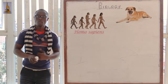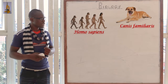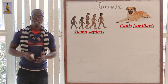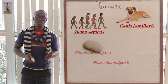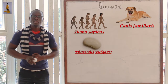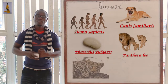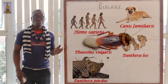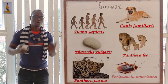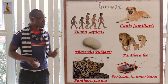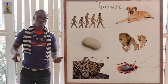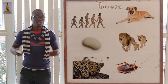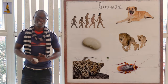The scientific name of the dog is Canis familiaris — genus name Canis begins with a capital letter, familiaris begins with a small letter. The bean is called Phaseolus vulgaris. The lion is Panthera leo. The leopard is Panthera pardus. And the cockroach has the scientific name Periplaneta americana. So next time you see a cockroach, say you have seen a Periplaneta americana!